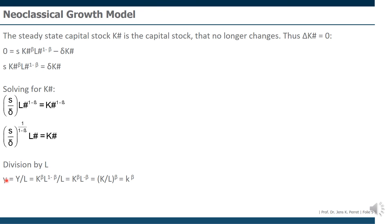This is like a small side note. Our GDP per capita, which is also GDP divided by labor, can, if we use a Cobb-Douglas production function, which we actually do here, be written as the capital stock per capita to the power of beta. We keep this in the back of our minds.